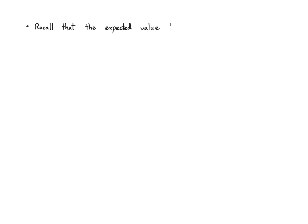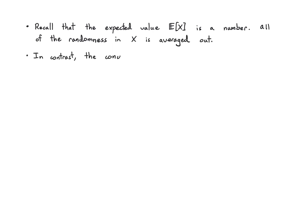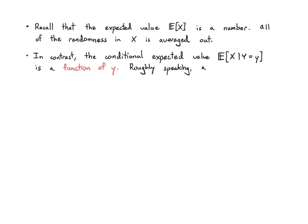When we were taking expected values like E of X, we knew we're just getting numbers — all of the randomness in the random variable X is averaged out. In contrast, when you take a conditional expected value like E of X given Y equals little y, that is going to be a function of this little y. Roughly speaking, all of the randomness in X that does not depend on Y is averaged out, but the rest is left in place.